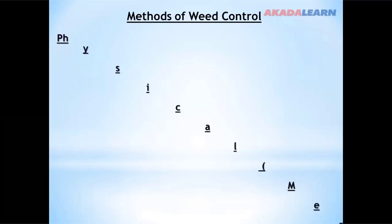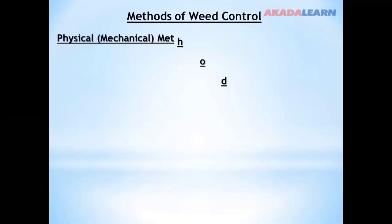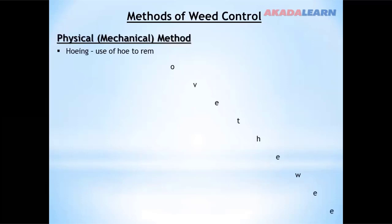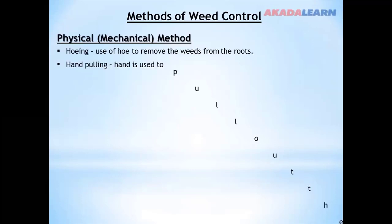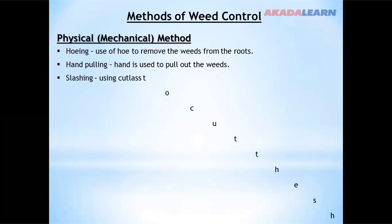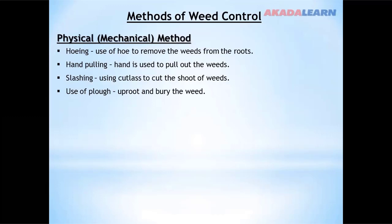Methods of weed control — number one, the physical method. In this method, a hoe can be used, hand pulling can be used, slashing with cutlasses can also be applied, use of a plow can be applied, and uprooting can also be used in controlling weeds.